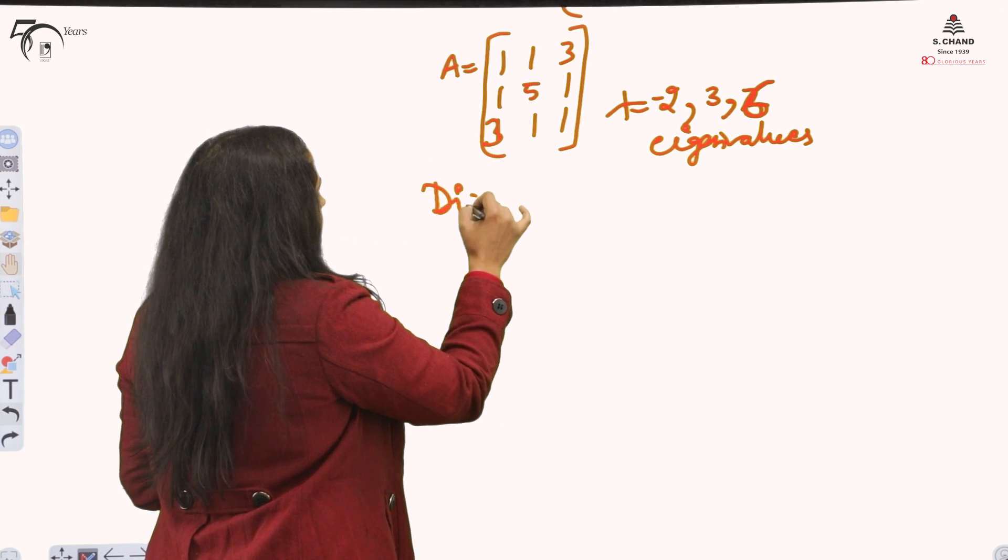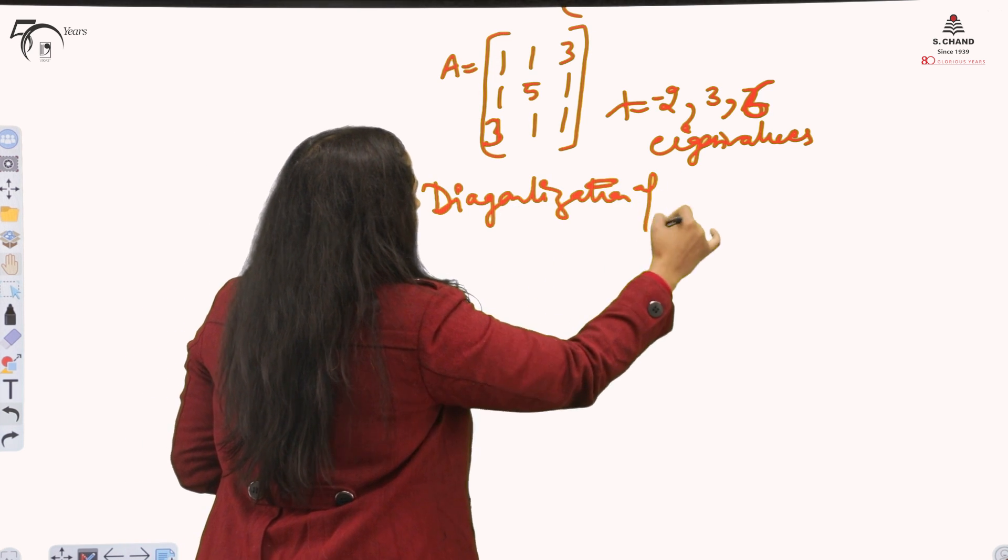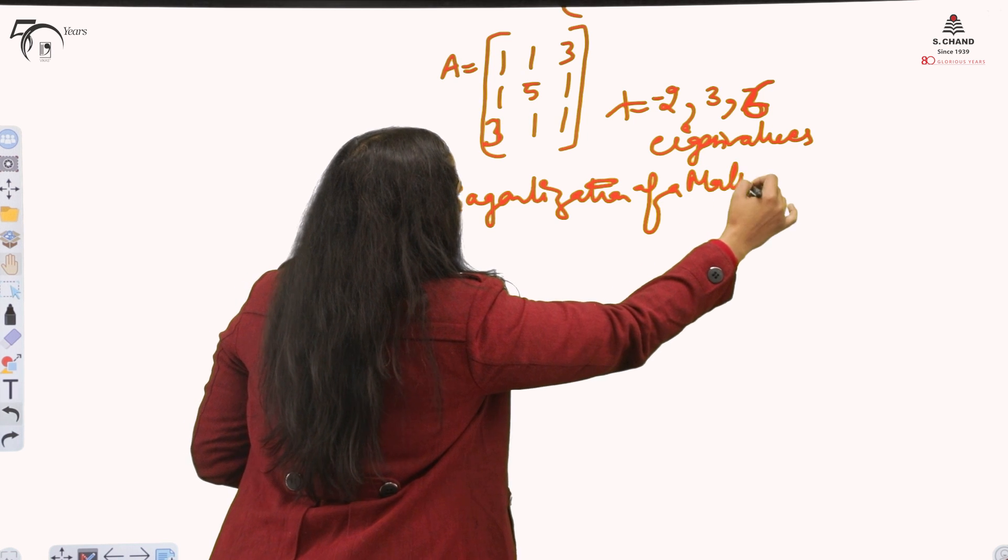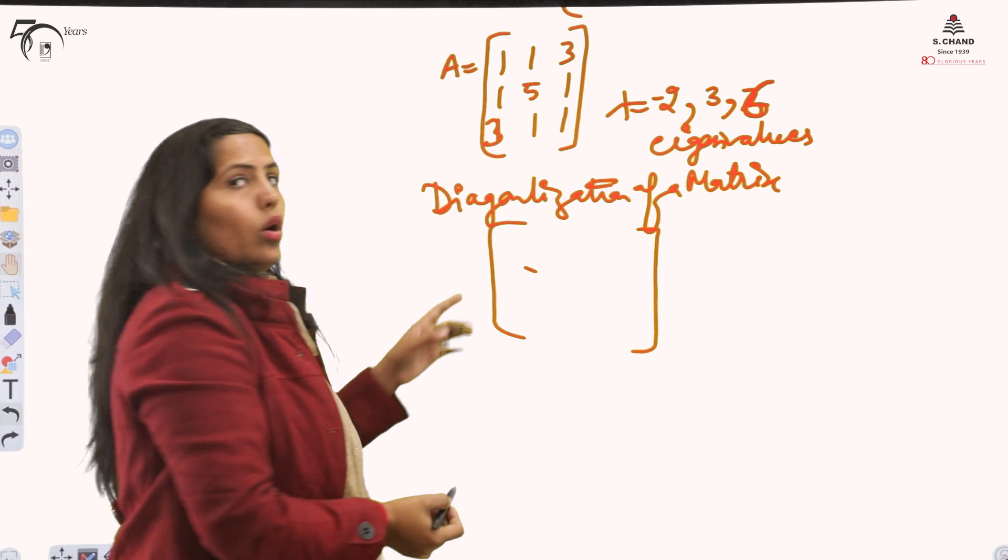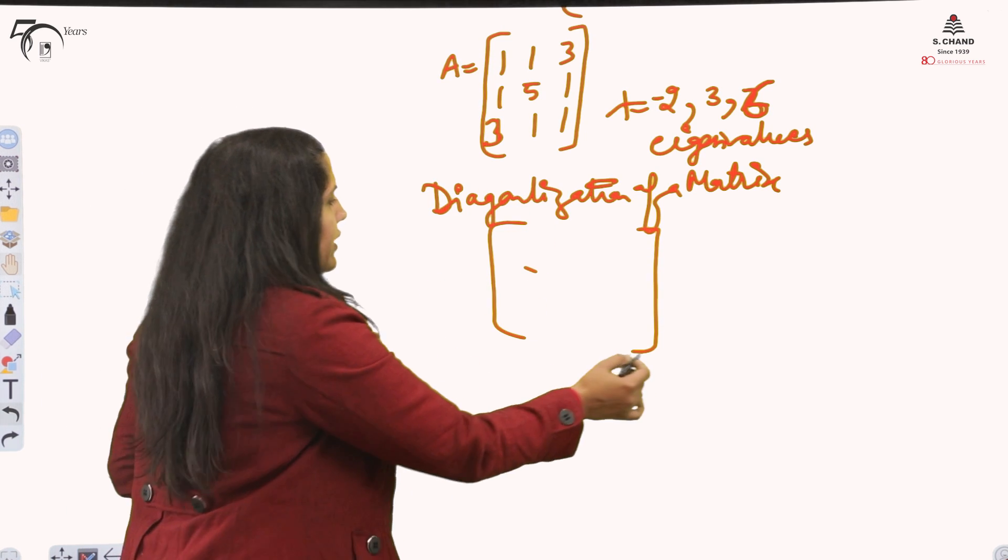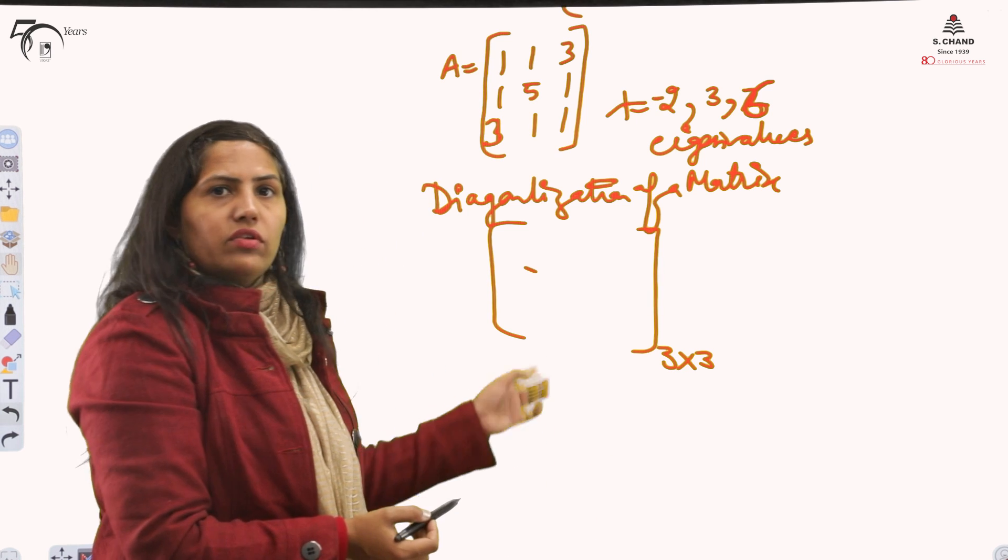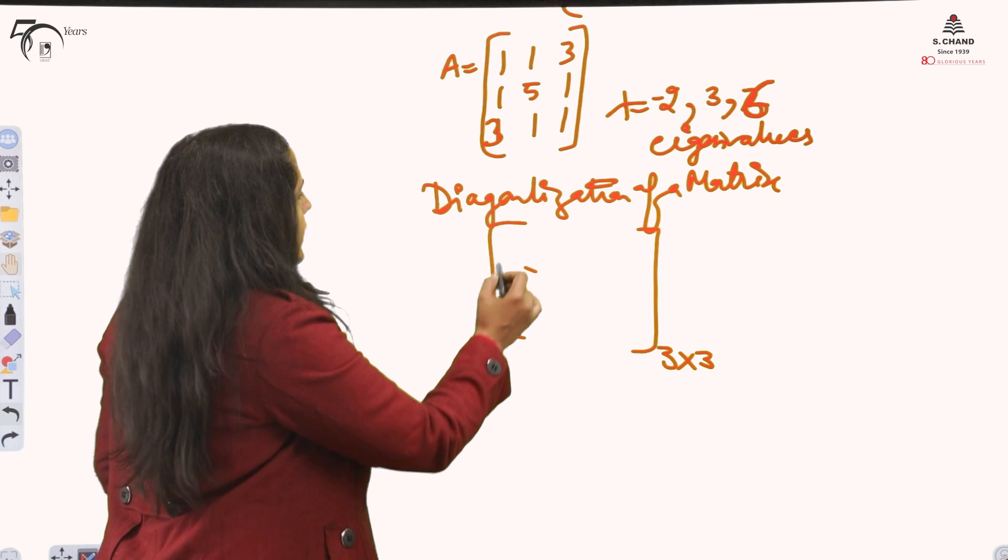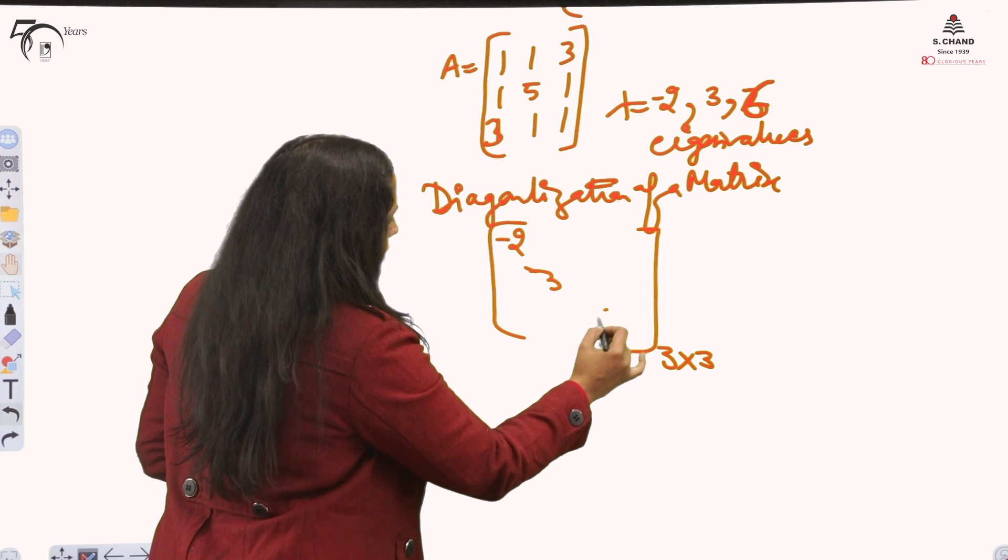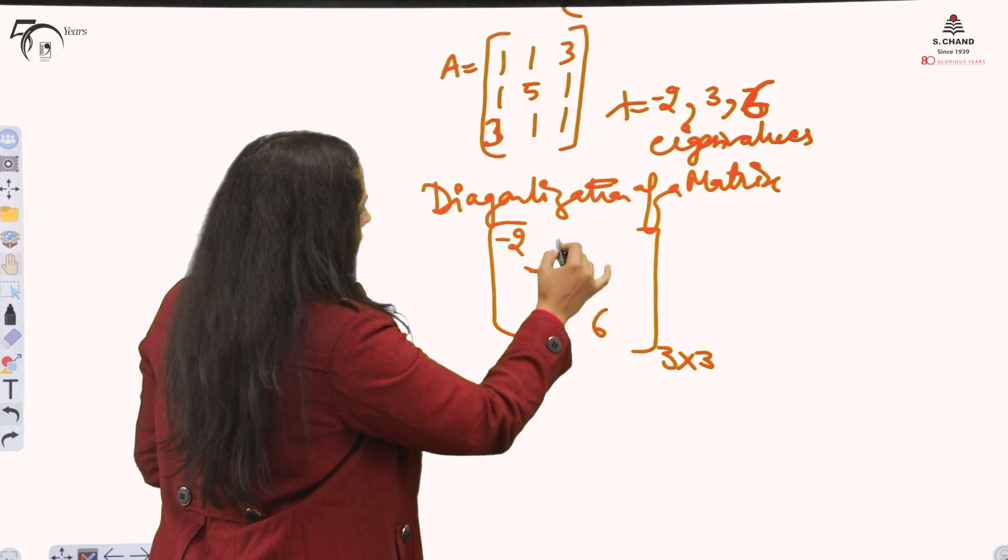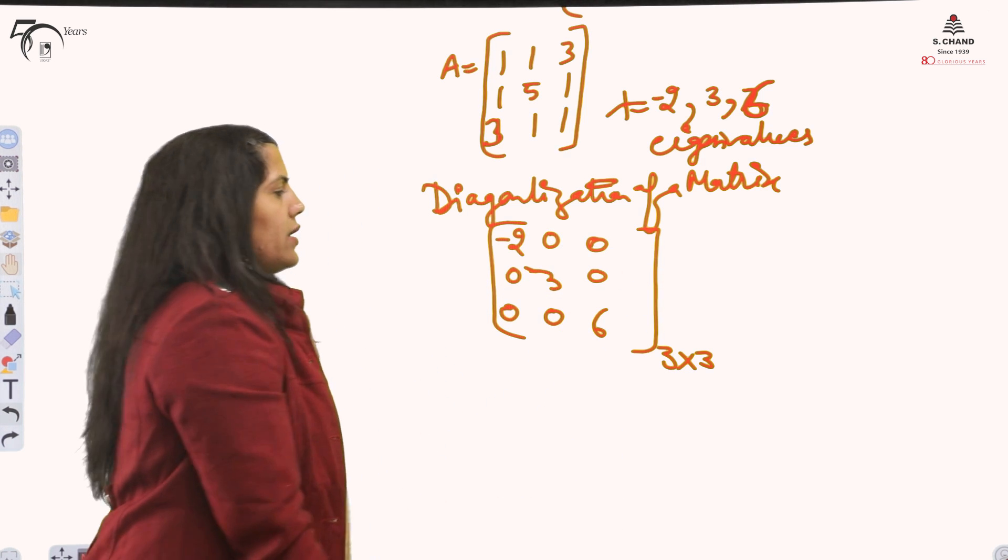First I will explain diagonalization of a matrix. In the diagonal, it will be 3 by 3 only if you are diagonalizing a 3 by 3 matrix and the result will be 3 by 3. What you do, write the eigenvalues in the diagonal - this is the main diagonal - and rest of the elements you will be writing as 0.